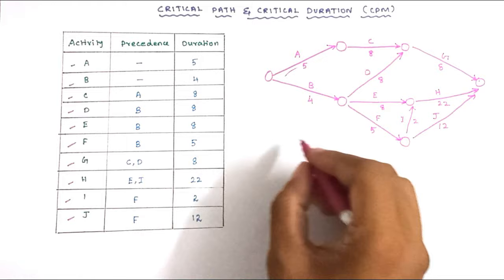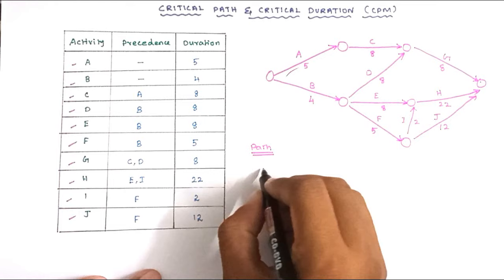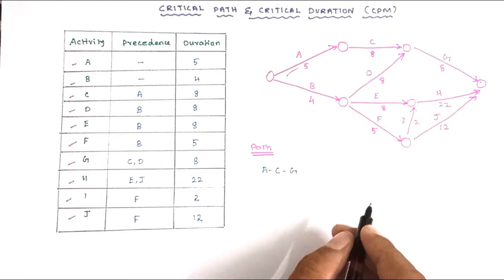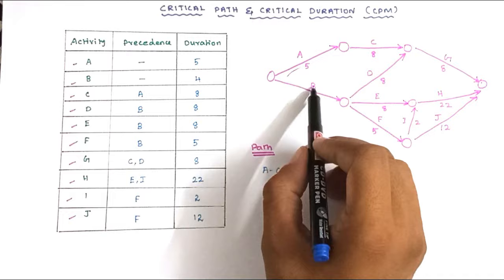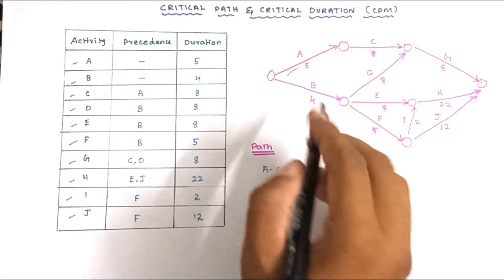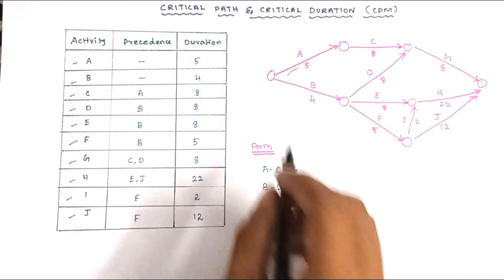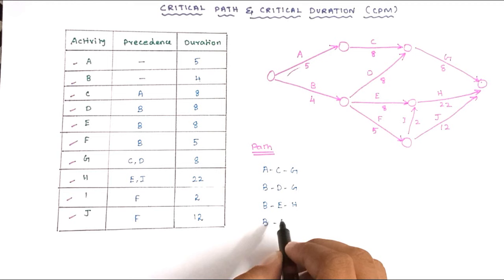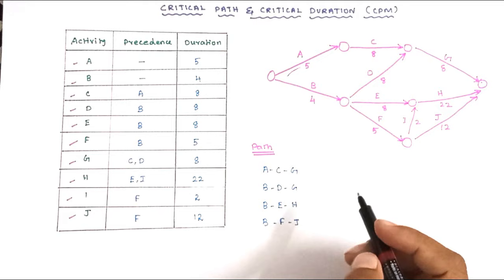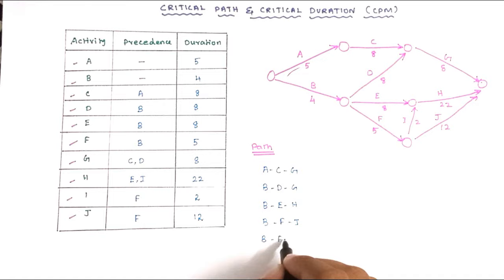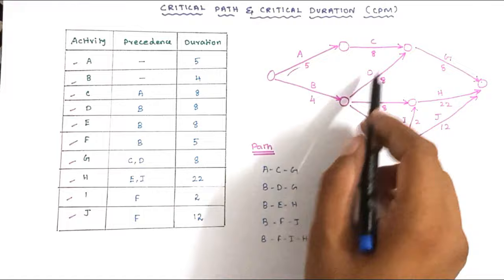Path 1 is A–C–G. Path 2 is B–D–G. Path 3 is B–E–H. Path 4 is B–F–J. Path 5 is B–F–I–H. So there are five paths in this network diagram.